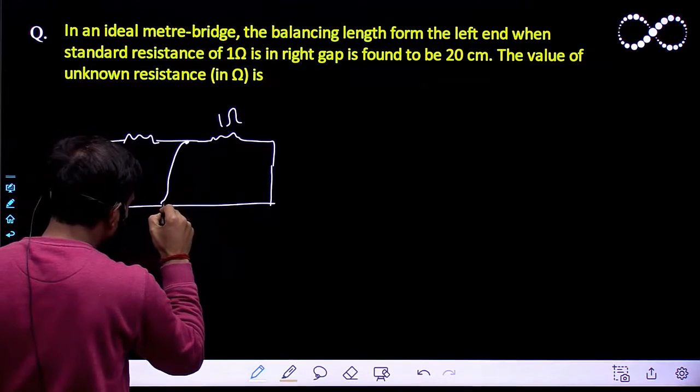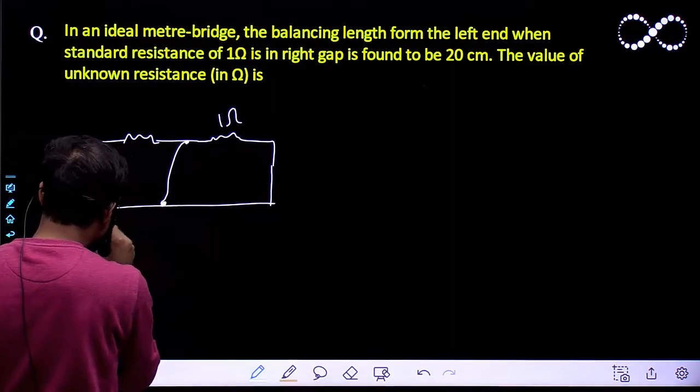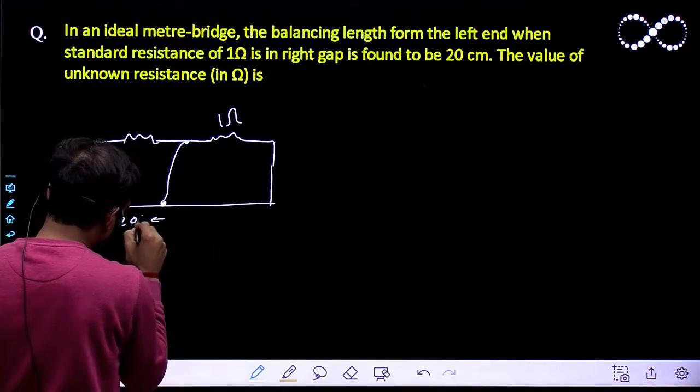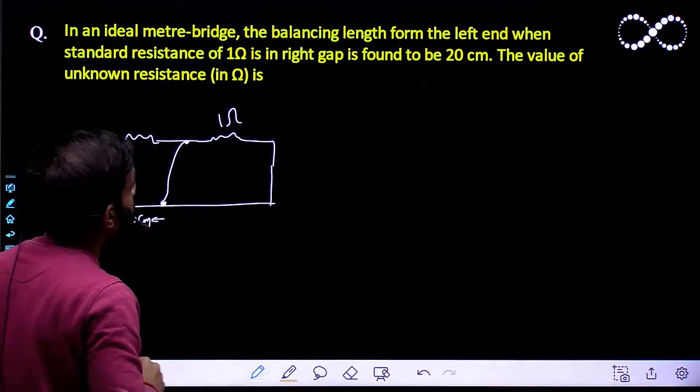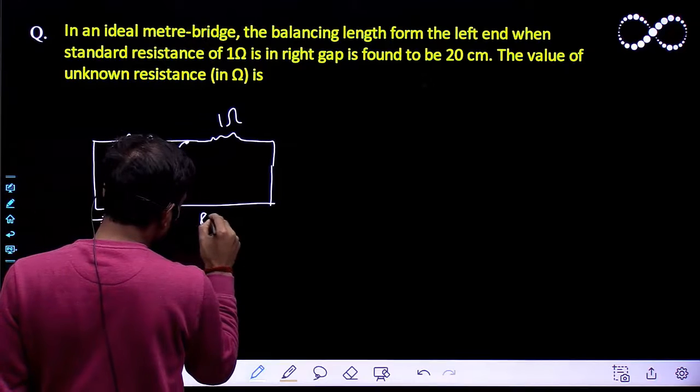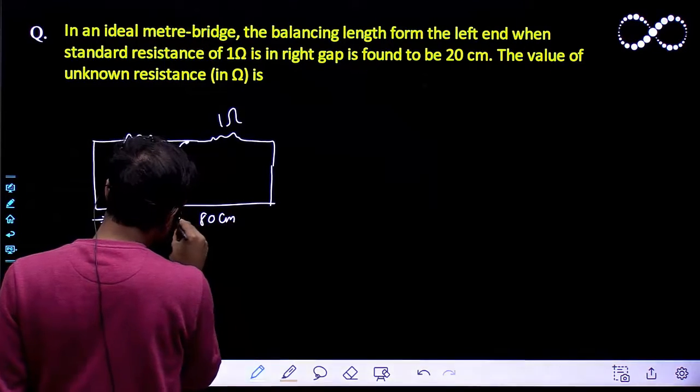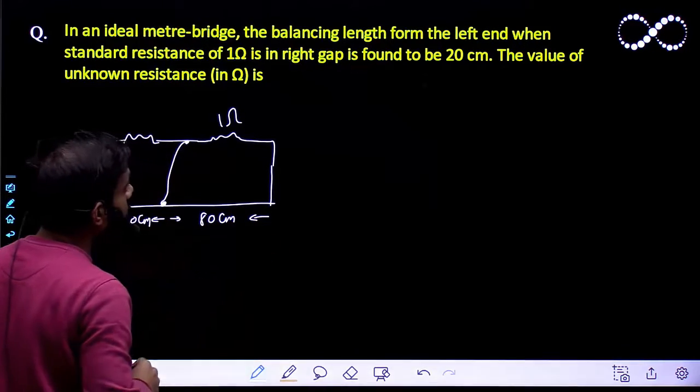So suppose the balancing point is coming from here, it is 20 cm from the left end. So if this is 20 cm, obviously this length will become 80 cm because this is the meter bridge, the total length is going to be 1 meter.